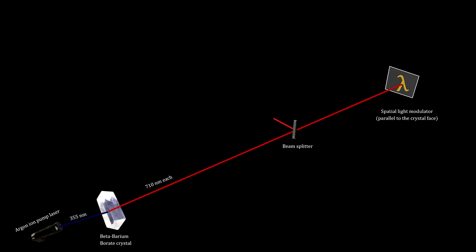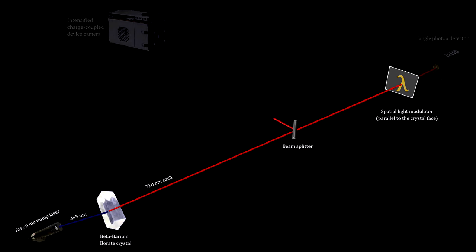Given the idler photon's wavelength, they will pass through gold and be blocked by silicon. The photons that pass through enter a single photon detector. This detector then sends a signal to the camera.